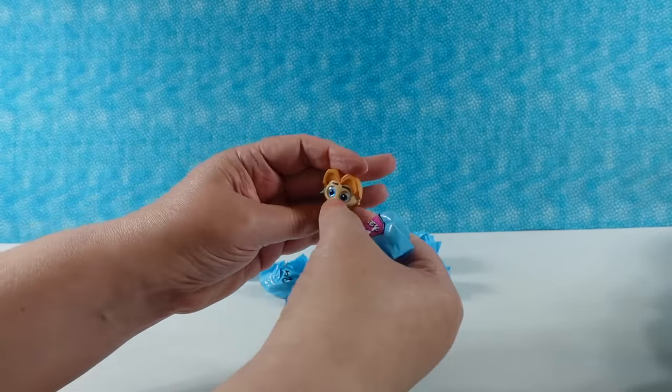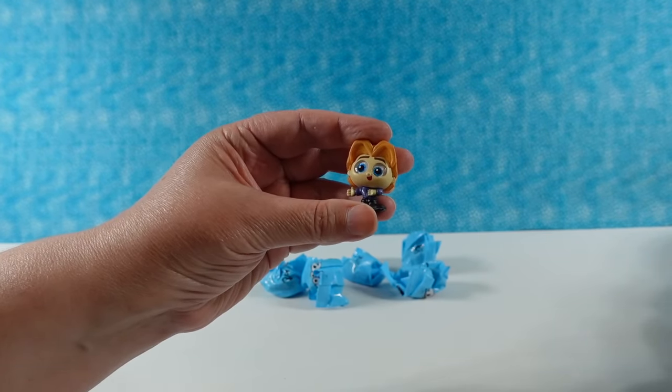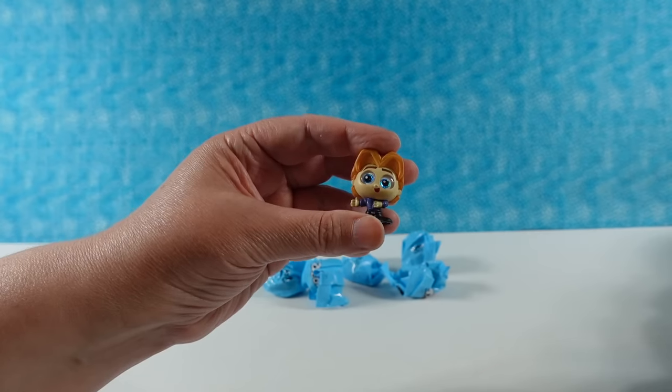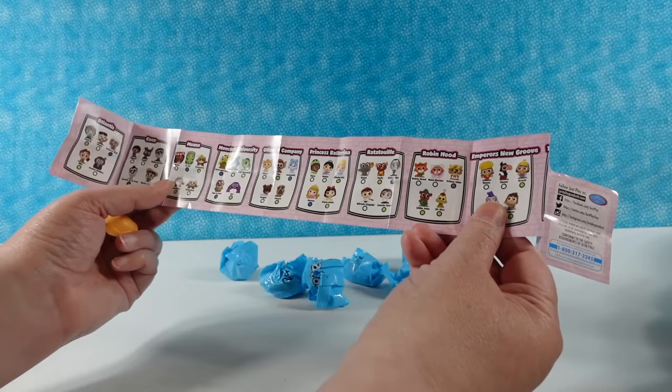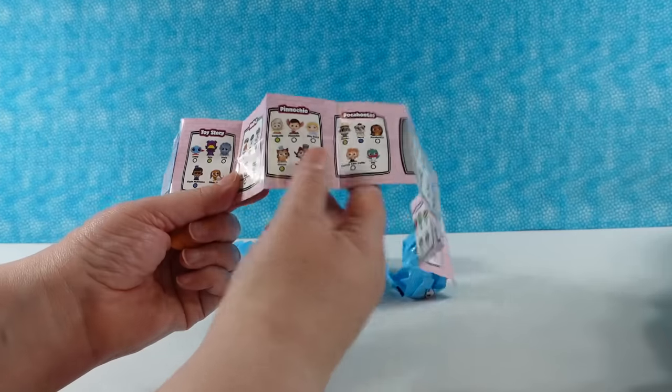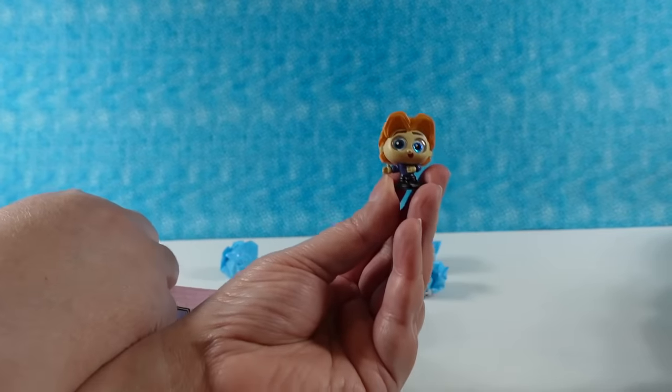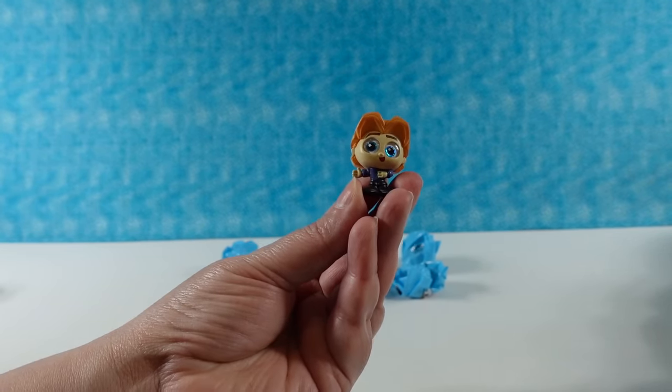Next up is, is that Miles or Milo from, no, this is one of the princes. Who is this? I don't know. He has good hair, though. He does have good hair. We've gotten him before. Where is he? Captain John Smith. He's not a prince. Captain John Smith from Pocahontas. He's a hair model. Yes, he is.